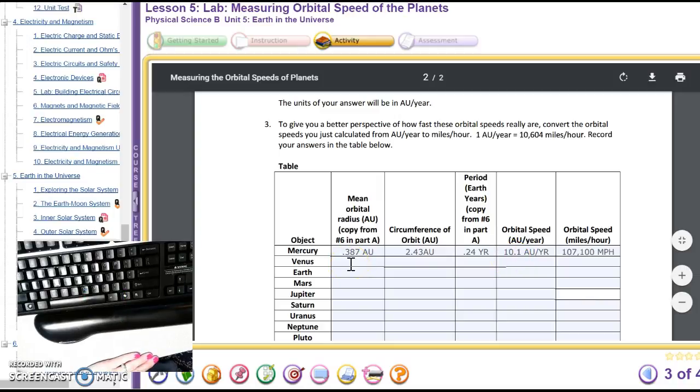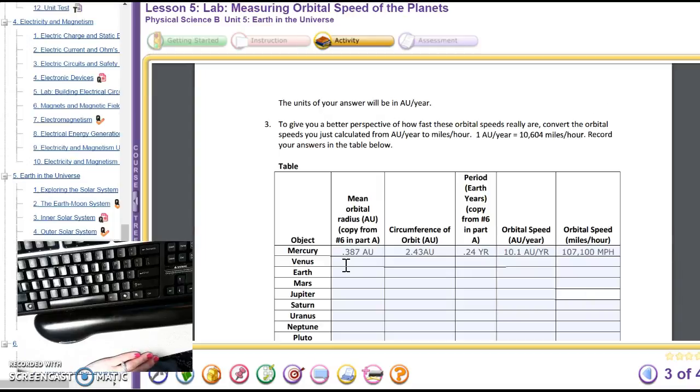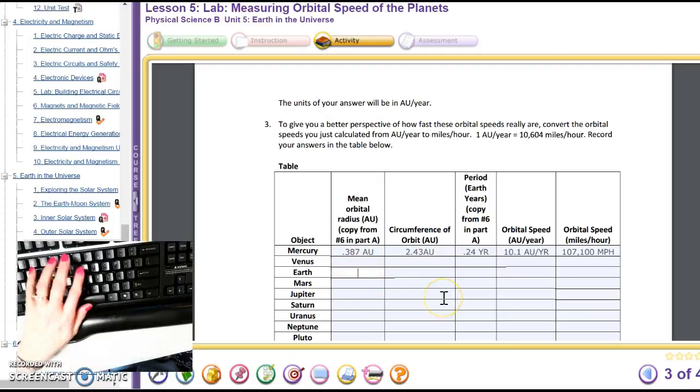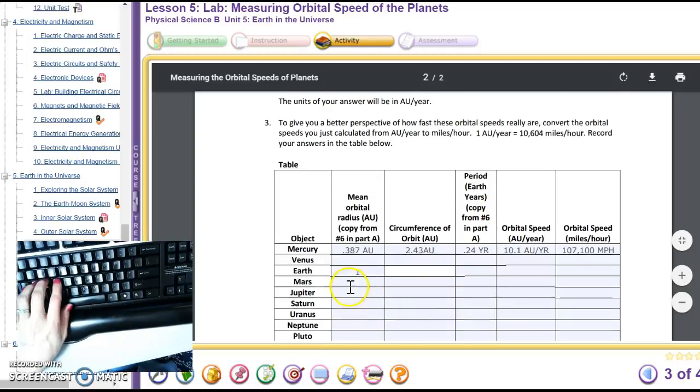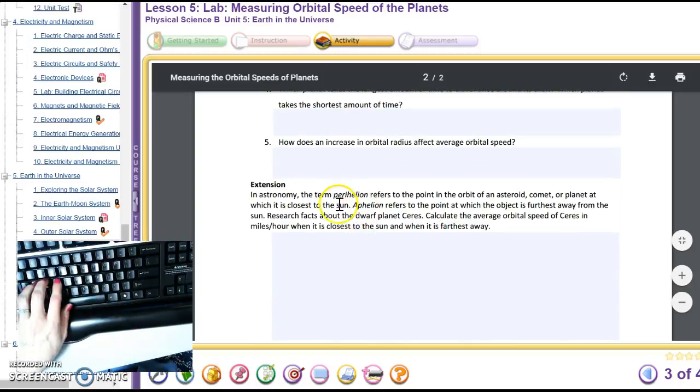So hopefully that made sense. If not, rewind it and watch that part again. But that's what you're going to be doing for all of the planets. Obviously Earth is the easiest. It's 1 AU here. 2 pi r is just going to be 2 times the radius, which is 1. 2 times pi. So the rest of them will let you figure out on your own.